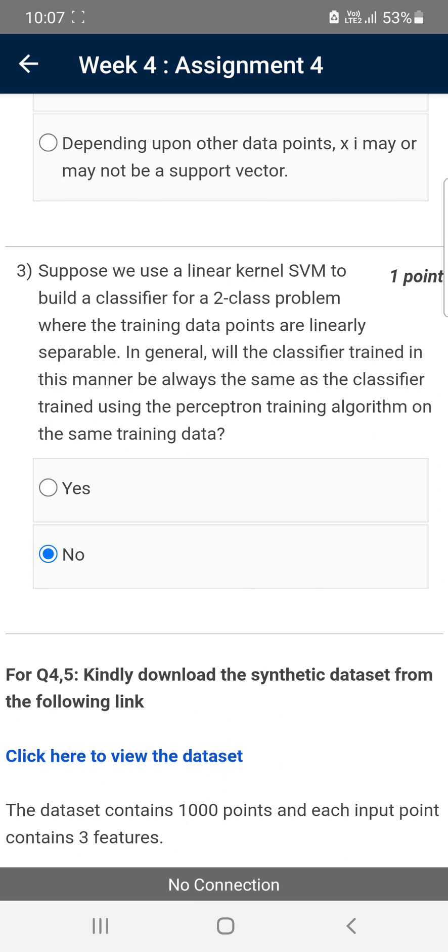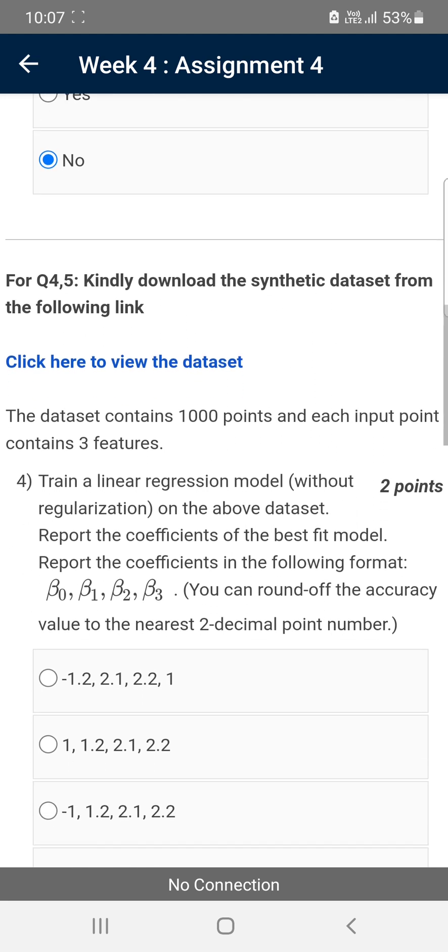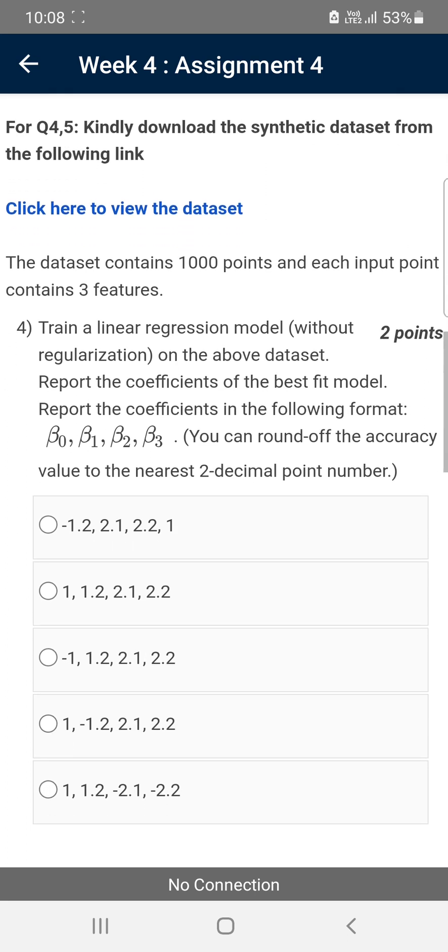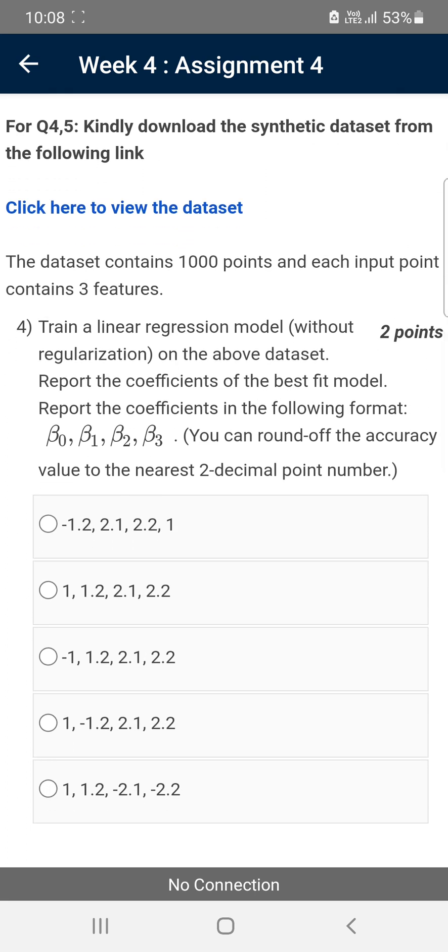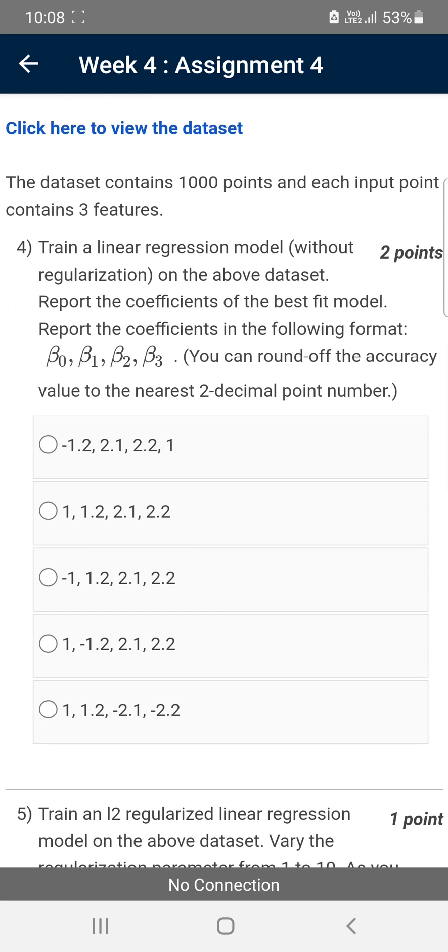Moving on to the fourth question. The fourth and fifth questions belong to a dataset given. For the fourth question, train a linear regression model. They are asking to report the coefficients of the best fit model in the format β0, β1, β2, and β3. For the fourth question, the probable solution is the fourth option.